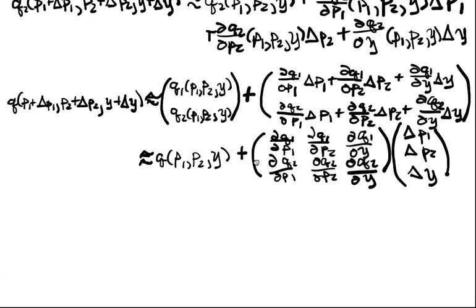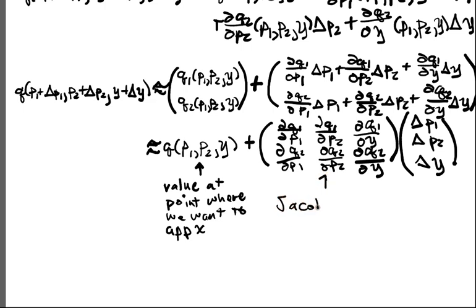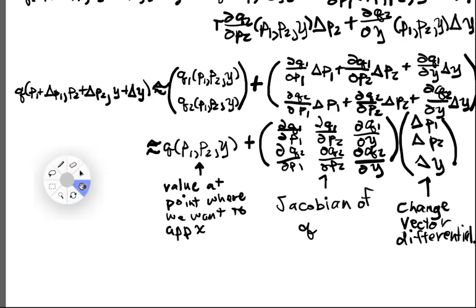We have a nice interpretation for all these quantities. This is the value of Q at the point where we want to approximate. We want to approximate around this point. This guy is just the Jacobian of Q, and this is the change vector or differential.